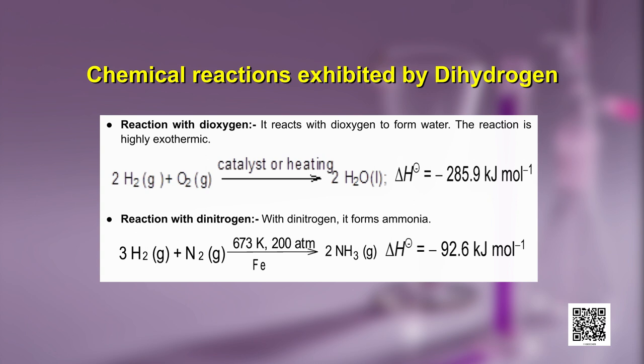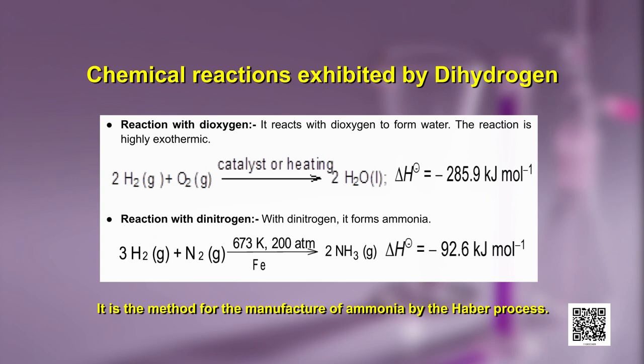Reaction with dinitrogen: hydrogen reacts with dinitrogen to form ammonia. It requires high temperature, high pressure, and a catalyst. The enthalpy change is ΔH = −92.6 kJ/mol. This is the method used in the manufacture of ammonia by the Haber process.